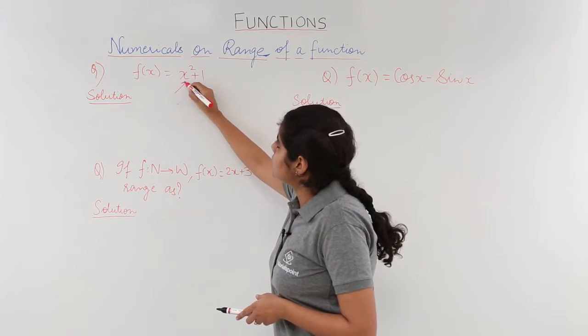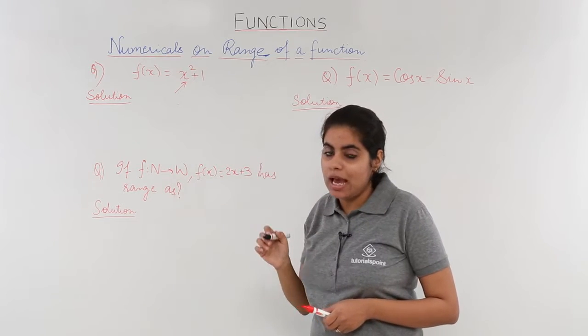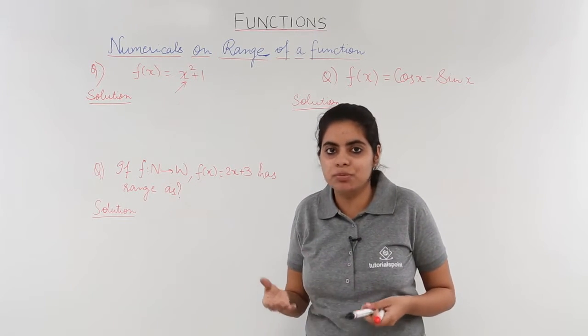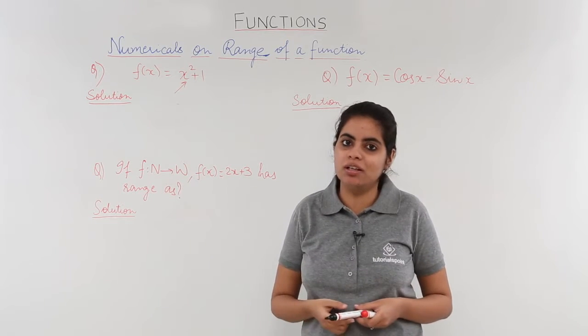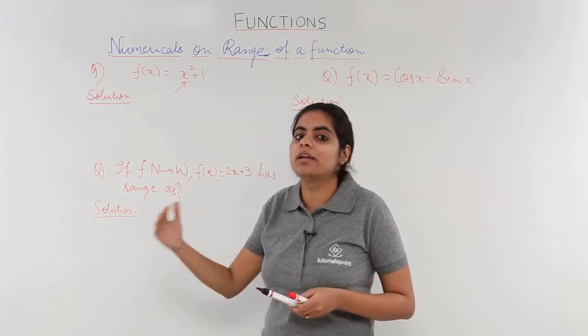See this x square term. The square function has the minimum value as what? Can the square function be negative? No, not at all. It has to be either 0 or greater than 0.